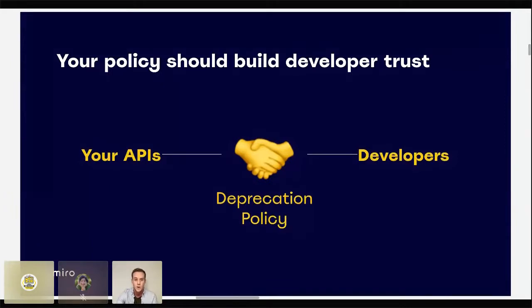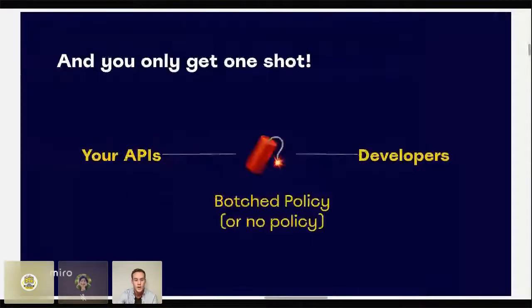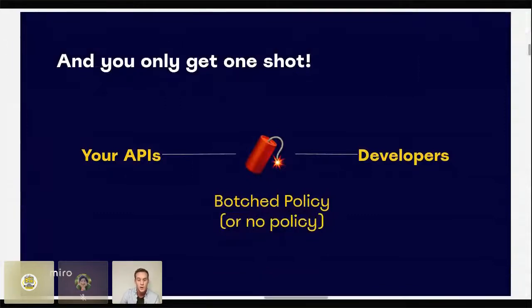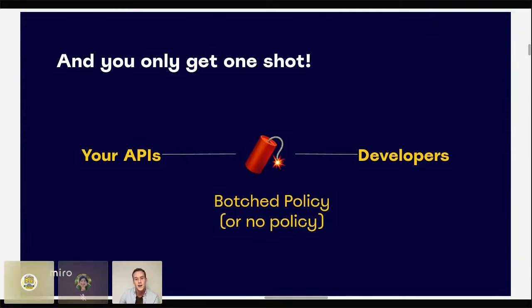It's really important to get this right on the first try, because you actually only get one shot. If your deprecation strategy reflects any of those ambiguities, developers are immediately going to start losing faith in your products and your decision making. Knowing what to avoid is just as important as knowing what success looks like. If all goes well, retirement should go kind of unnoticed — an uneventful situation. But if things don't go well, you're almost certain to hear about it. Developers talk — through social media, developer communities, Discord channels — and a bad experience won't stop with just one developer.